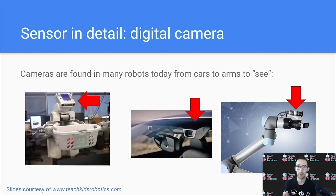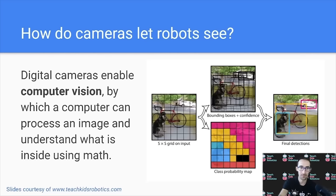Cameras are found in many robots today, from cars, to robotic arms, to robotic laundry machines. But, how do cameras actually let robots see? Digital cameras enable computer vision, by which a computer can process an image and understand what is inside using math.